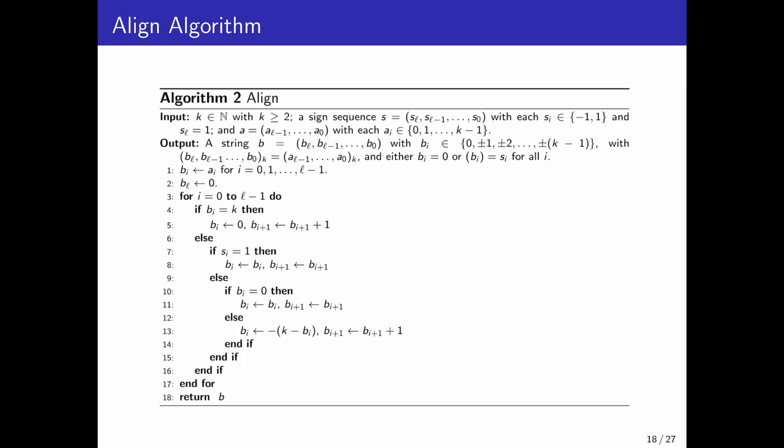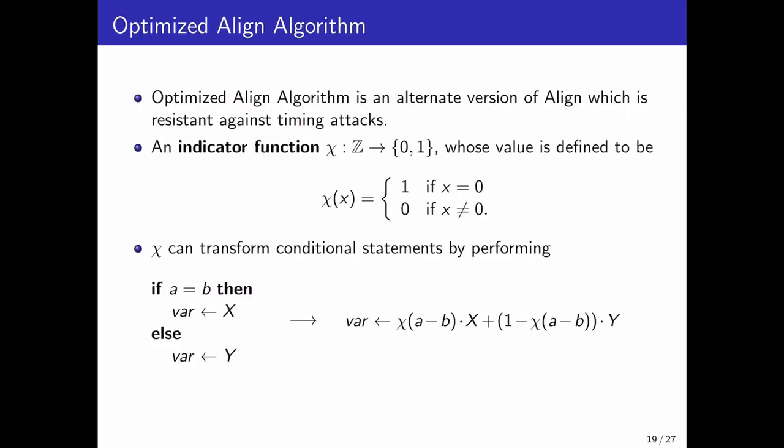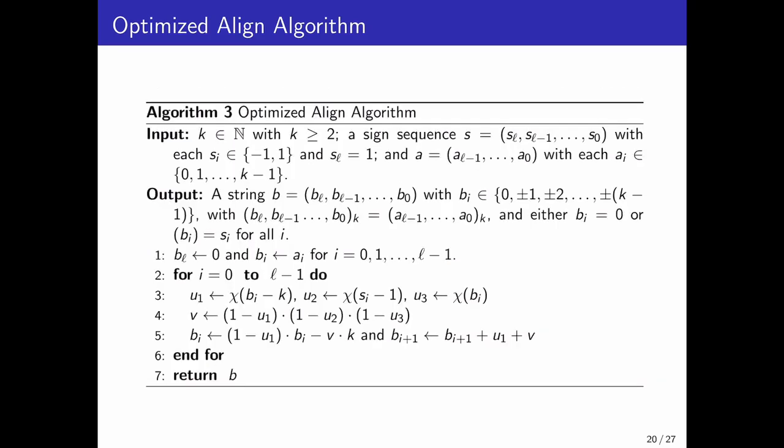Now, this is our align algorithm. But you can see that there are lots of conditional steps in it, which does not allow the algorithm to be regular. So we give an alternate version of the algorithm to get rid of the conditional steps. We use an indicator function in that case. So in our iteration steps, there is no if and else segment, which makes it regular in nature. So you can see in the optimized align algorithm, we use indicator function to get rid of all the if and else segment. And this is regular in nature.